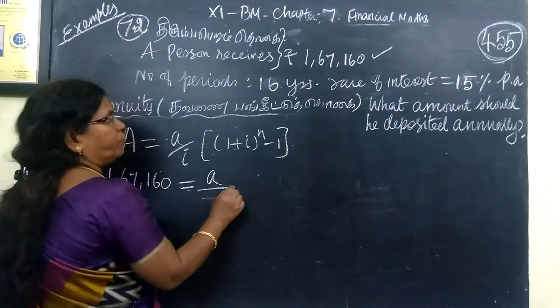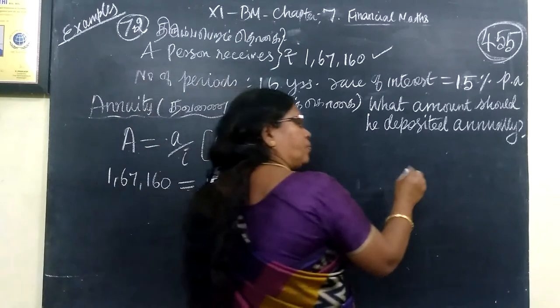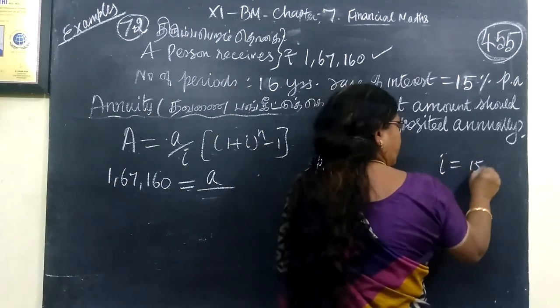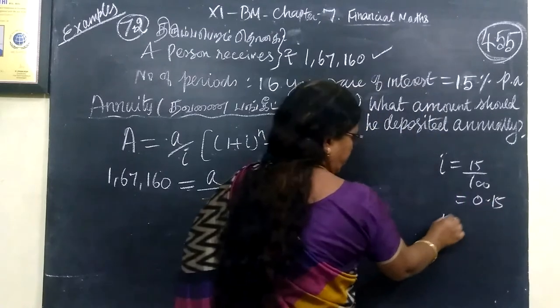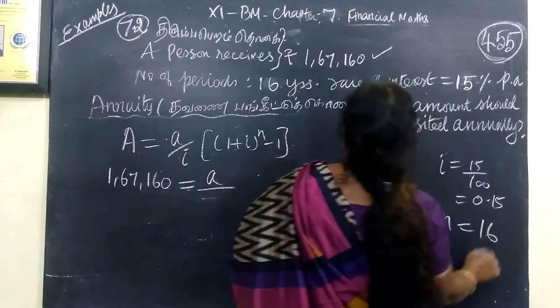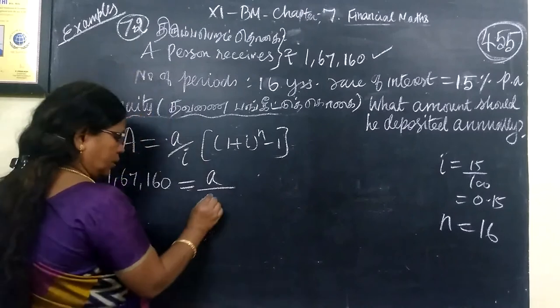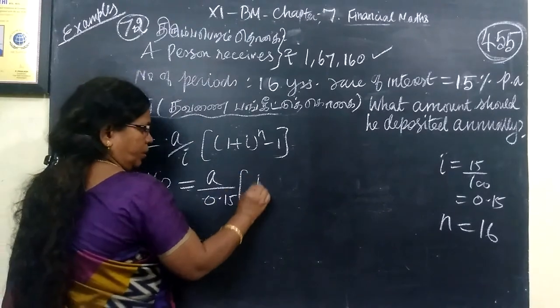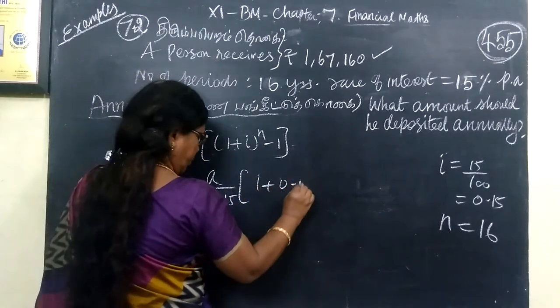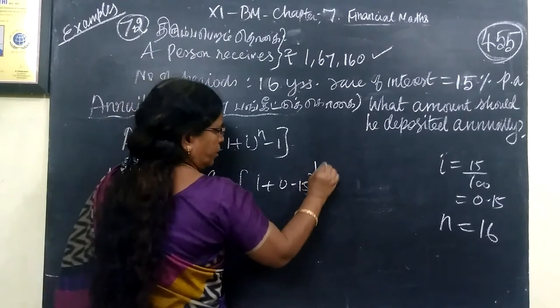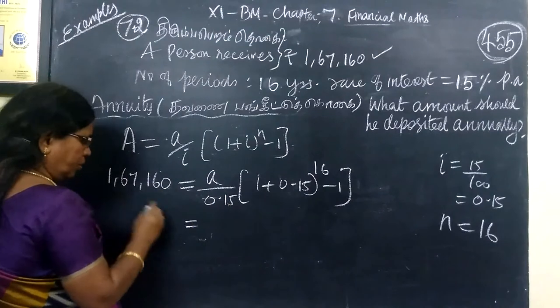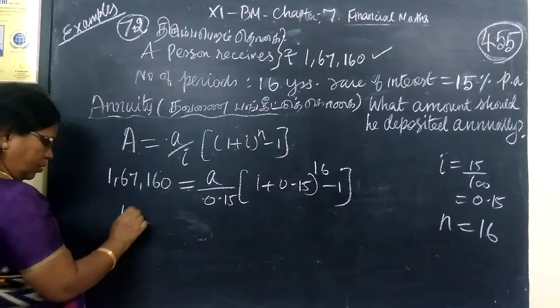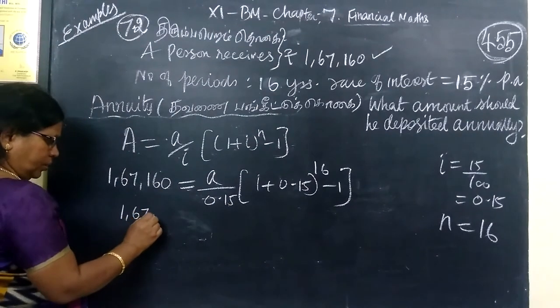A by i had value 15,000, 15 by 100, 0.15. N means 16. 0.15, 1 plus 0.15 whole power 16 minus 1, that is equal to 167.